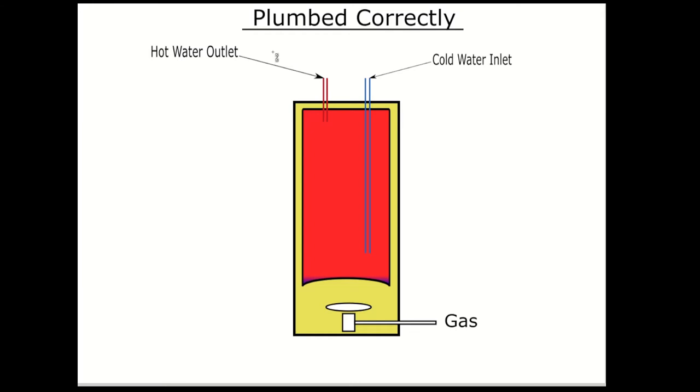When we open a hot water valve in the home, hot water comes out of the hot water outlet pipe. The cold water makes up the water that's leaving by coming in the cold water inlet pipe. Inside the water heater, there's a dip tube for the cold water that directs it to the bottom of the tank.